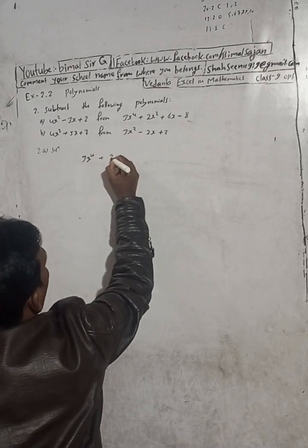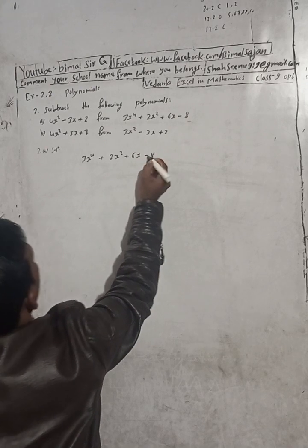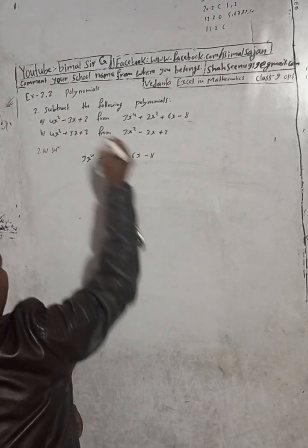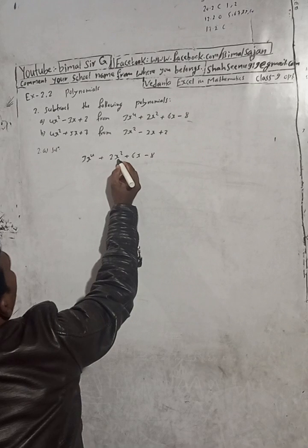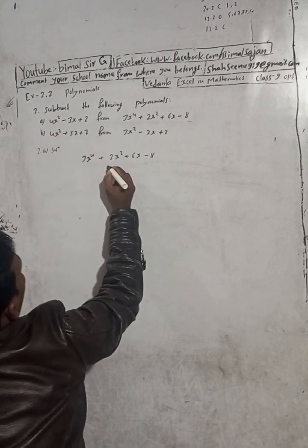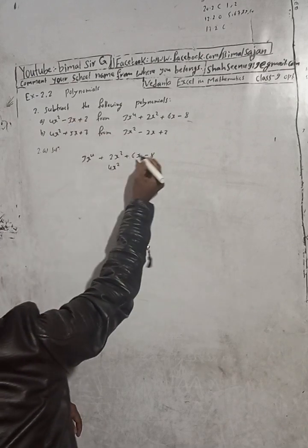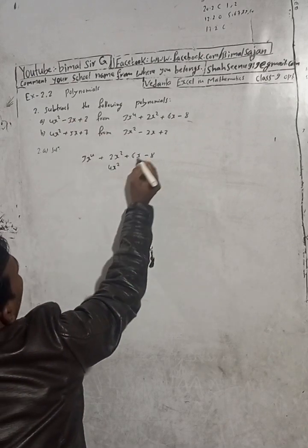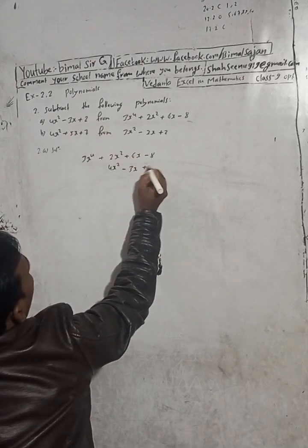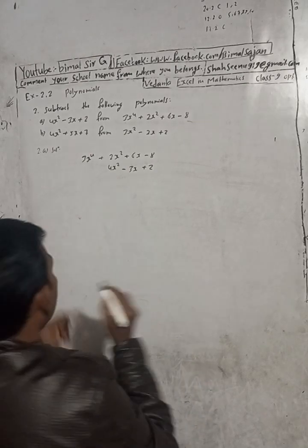So we have 3x to the power 4 plus 2x squared plus 6x minus 8, and we place 4x squared minus 3x plus 2 below it, aligning like terms. We align minus 3x and plus 2x accordingly.